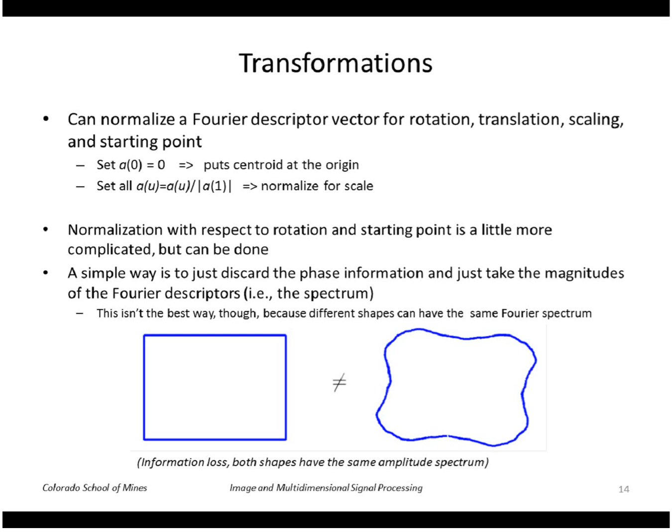So all a rotation does is it changes the phase of the Fourier descriptors, and similarly for the starting point. So if we just discard the phase of the Fourier descriptors and just take the magnitudes, namely the spectrum, and use that as our feature vector, that should be invariant.